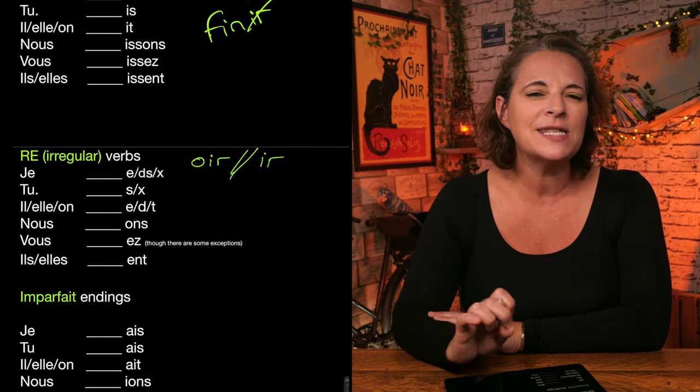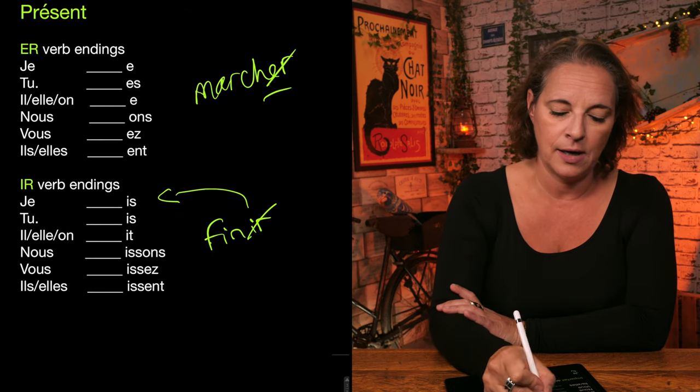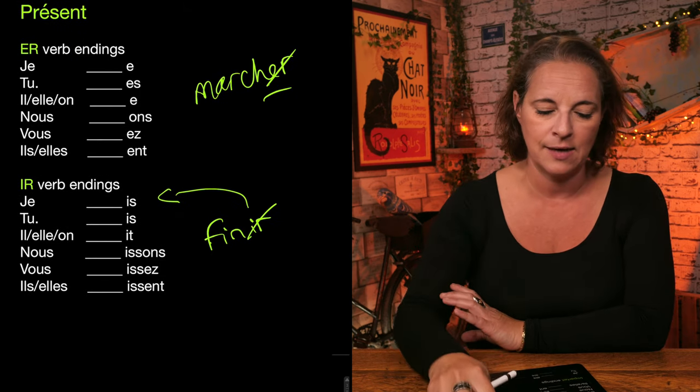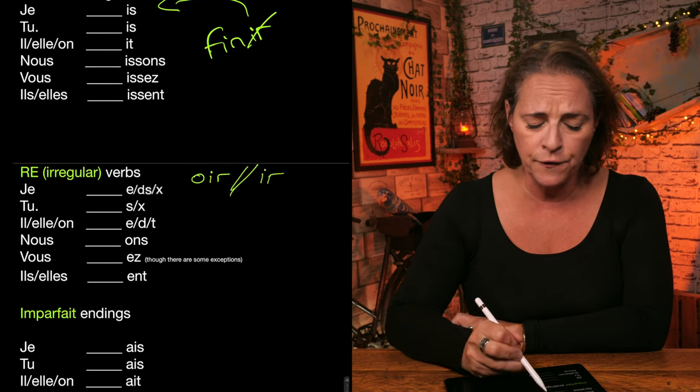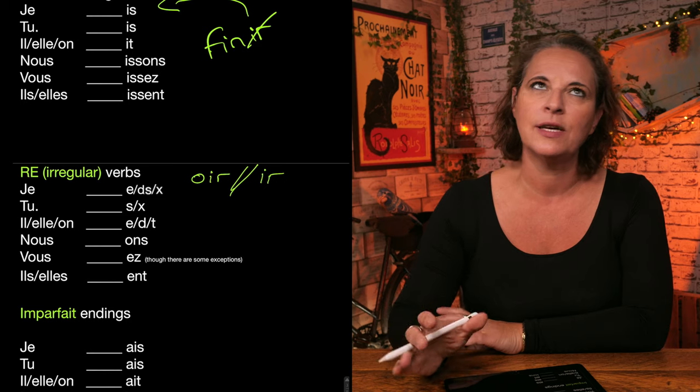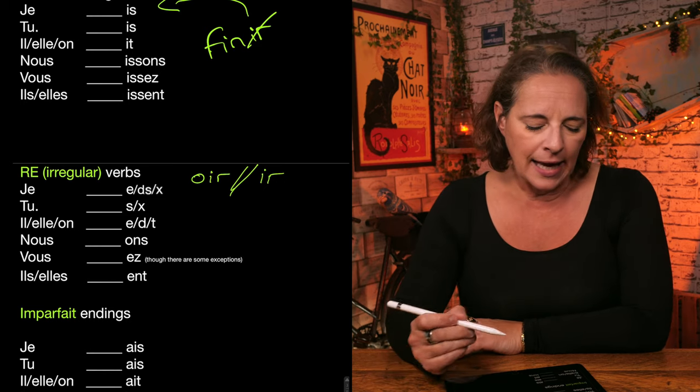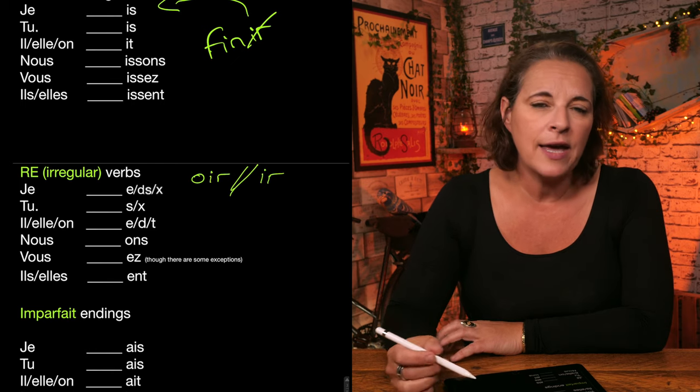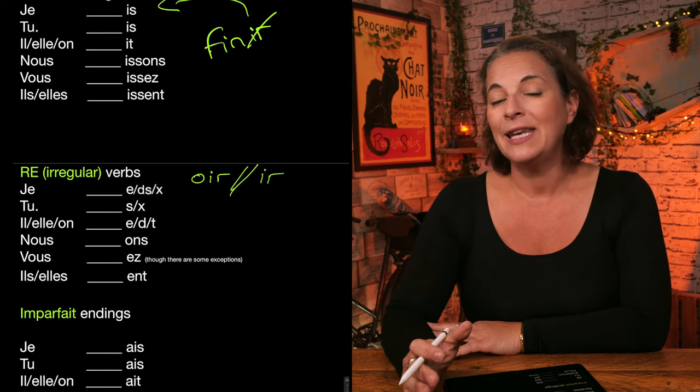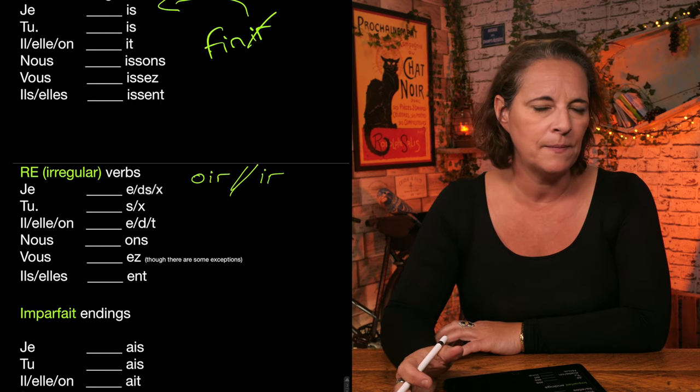But nous will always have on or NS, the same as IR verbs or NS and the same as IR verbs or NS for nous. So for vous, it's always E, Z, though there are some exceptions, like the verb to be. And il and elle will have E and T. And this is why conjugating a verb, an irregular verb in the present or any other tenses is difficult.